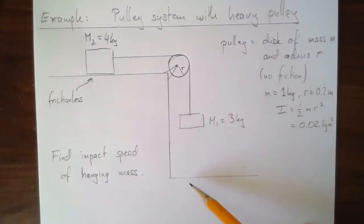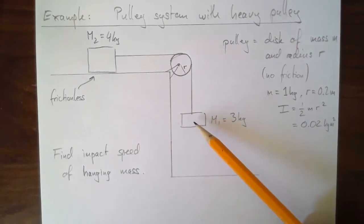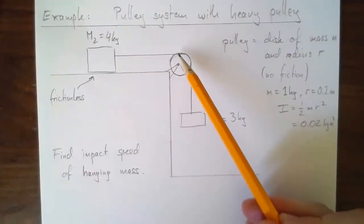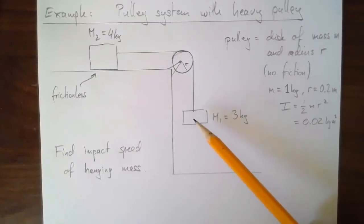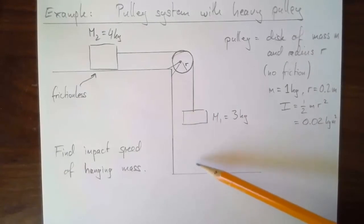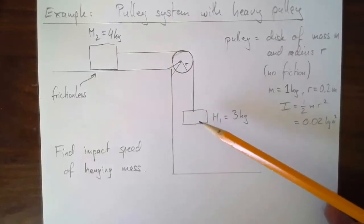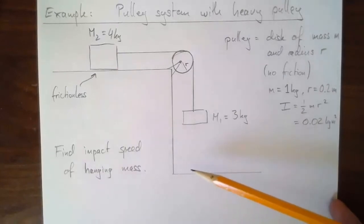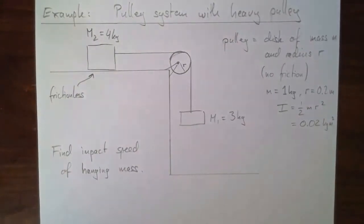Our goal is to find the impact speed of mass m1. We'll use energy for that. If you wanted the time it takes to fall, you couldn't use energy — you'd have to find the acceleration using forces and torques (tension, weight, torque on the pulley). That's a good calculation to work through separately. We only care about the impact speed, and energy conservation can't tell us how long something takes since energy is conserved in time.